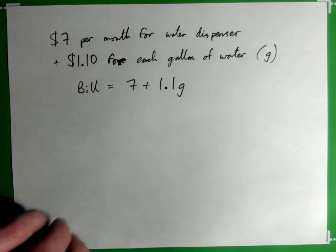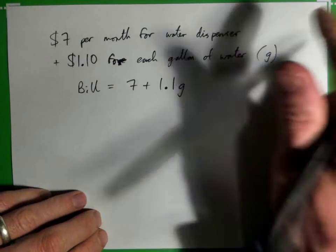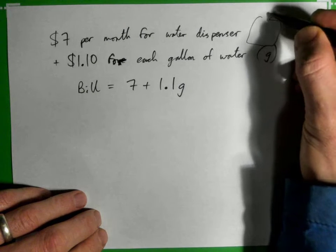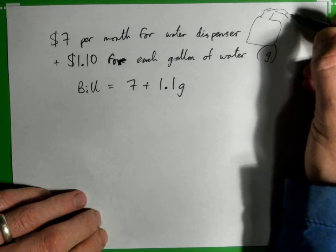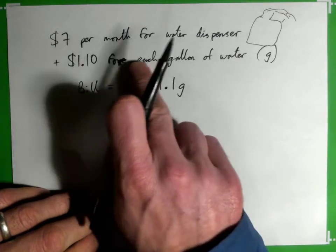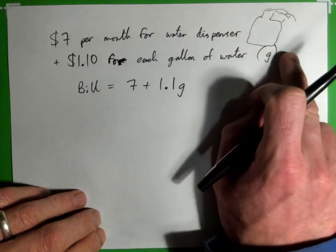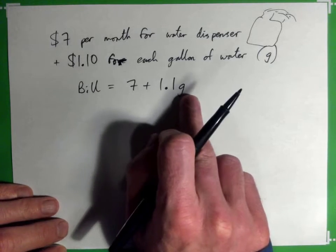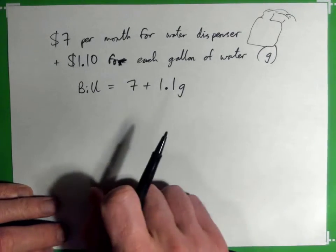We have a charge of $7 per month for a water dispenser—some sort of machine that dispenses water—and $1.10 for each gallon of water. Seems steep, but there you go. The bill is 7 + 1.1G, where G is the number of gallons.